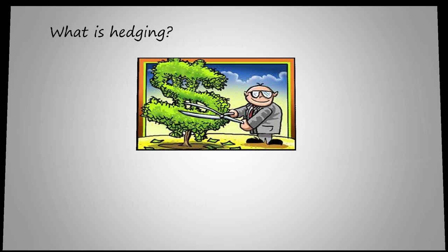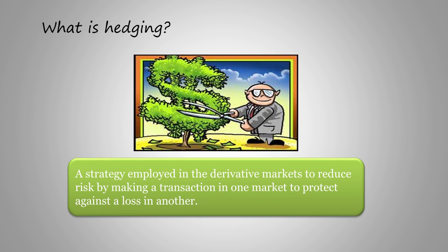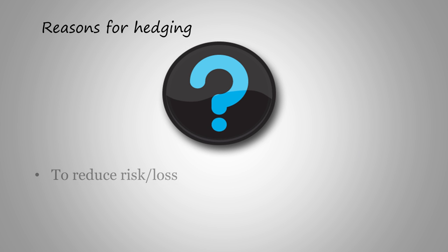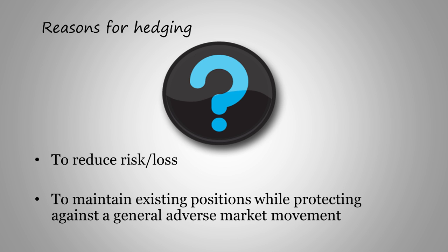So what is hedging? Hedging is a type of strategy that is employed in the derivative market to reduce risk by making a transaction in one market to protect against a loss in another. Hence, the main reasons for hedging are to reduce risk or loss, and also to maintain existing positions while protecting against a general adverse market movement.